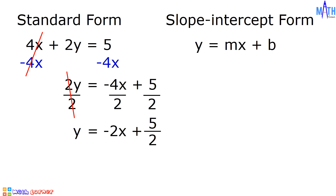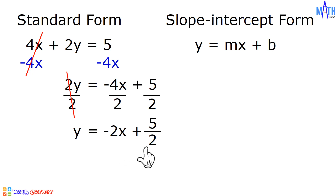And the slope-intercept form is Y equals negative 2x plus 5 over 2, where M is equal to negative 2 and B is equal to 5 over 2.